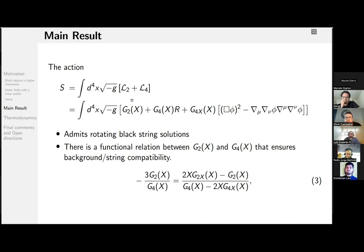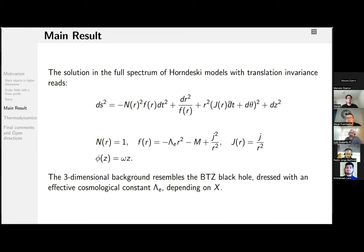Okay. So, the general model admits rotating black string solutions. There is the compatibility issue Oscar asked about, encoded by this equation. Again, recall X is the kinetic term. So, at the end of the day, if I gave you two functions, G₂ and G₄, and they satisfy this constraint equation, you can obtain the following solution for a rotating string. But, as you can see, the three-dimensional background just resembles the BTZ black hole, and all the information for the G₂ and G₄ functions goes just to the cosmological constant, or an effective cosmological constant, if you want.